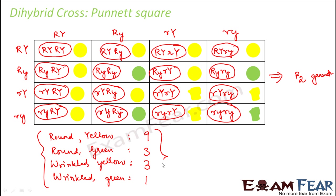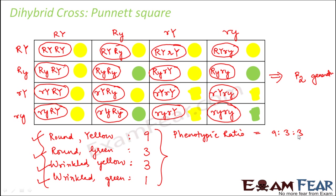So if you look at the phenotypic ratio, this gives you four unique phenotypes: round yellow, round green, wrinkled yellow, and wrinkled green. So the phenotypic ratio of the F2 generation is going to be 9:3:3:1. Now, what about the genotypic ratio? If you want to find out the genotypic ratio, yes you can do that, but that is going to be a little more tedious because you have a lot of unique genotypes.